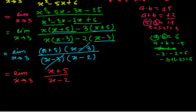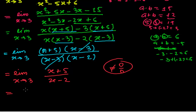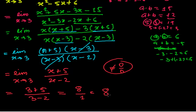Finally we get: limit when x tends to 3 of (x plus 5) over (x minus 2). Now if you plug the value 3: 3 plus 5 = 8 and 3 minus 2 = 1, so you're not getting 0 over 0 anymore. The limiting value is 8 over 1, which equals 8.